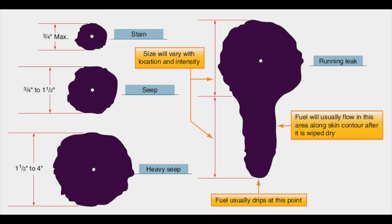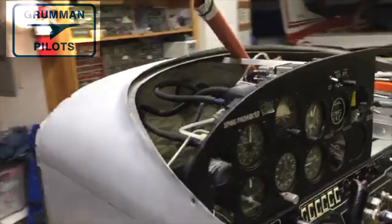There is a stain, and here's a measurement on the stain so you can see when it changes over to a seep, and from a seep to a heavy seep — which is sometimes called a weep — and then finally you're going to have a running leak. A running leak is usually going to be dripping onto the ground, and along the way it will distort wing root seals and a bunch of other stuff. Now let's take a look at some of these on the airplane.